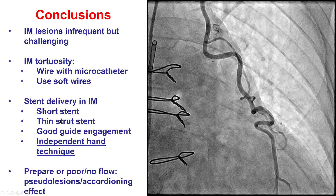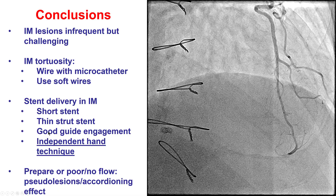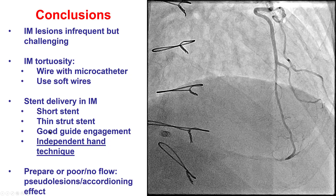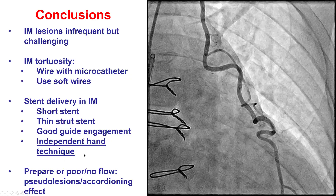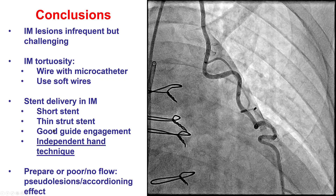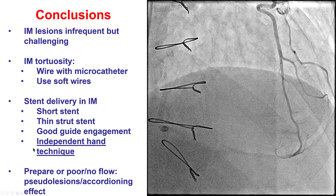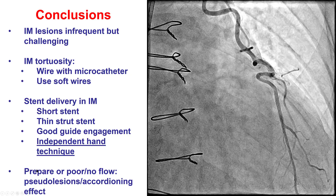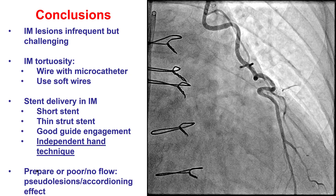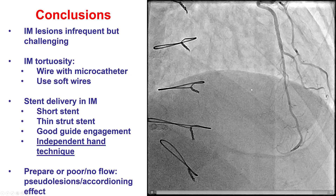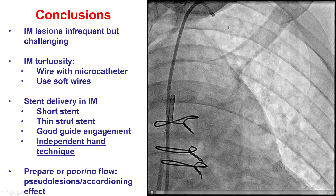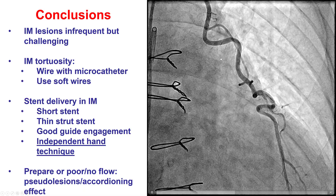Stent delivery can be challenging through these very tortuous grafts. One way to overcome this is to use a short, thin strut stent, prepare the lesion well, and have good guide engagement. Most importantly for this case, use the independent hand technique — having the left hand truly support the guide and prevent backward movement, while using the right hand to push the stent to the desired location. If there is poor flow, that can be a problem and we may have to give up position and let the vessel resume antegrade flow. But for a few minutes, as it happened in this case, patients can often tolerate this, and the procedure was successfully completed. Thank you.